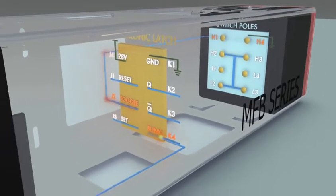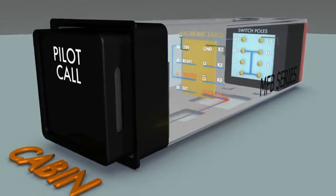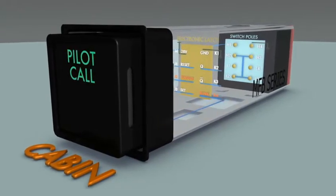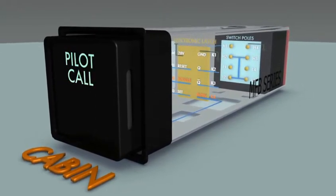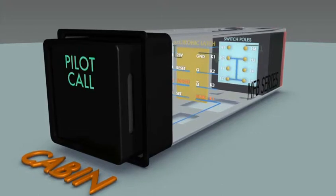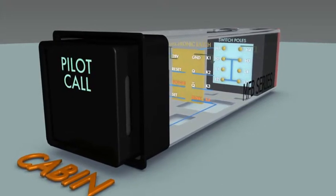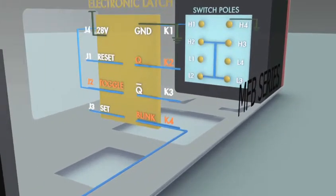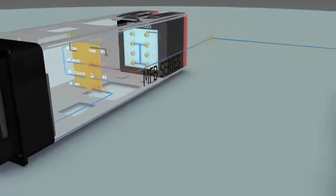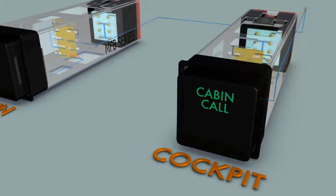This action activates the blink output, causing the pilot call switch to blink in a simulated ringer mode. The same activation of the pilot call switch and ground to toggle also activates the cue output of the electronic latch, illuminating the cabin call legend in the cockpit. Each of these outputs is activated by the toggle input.